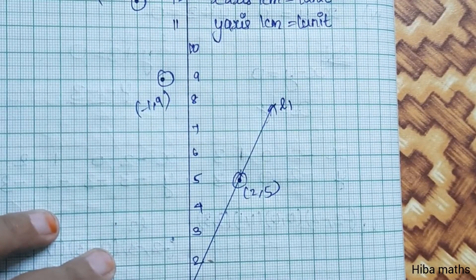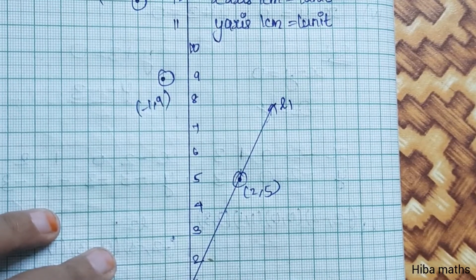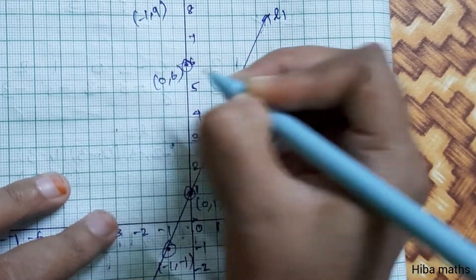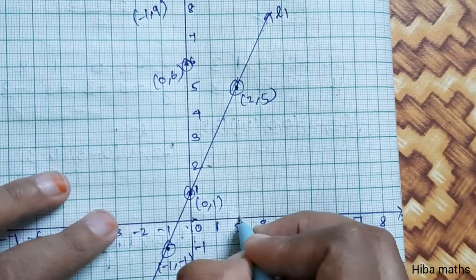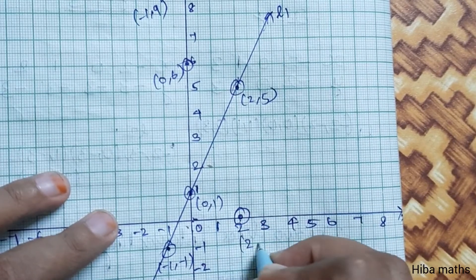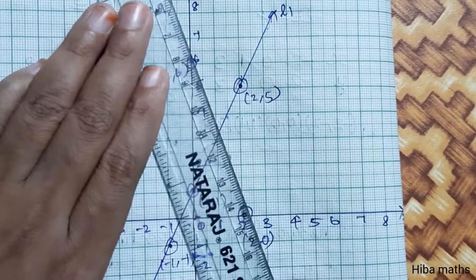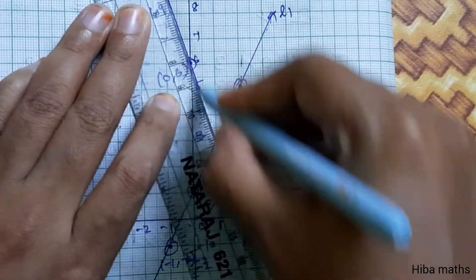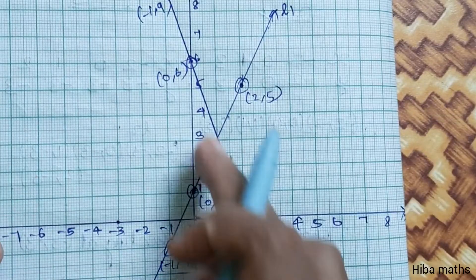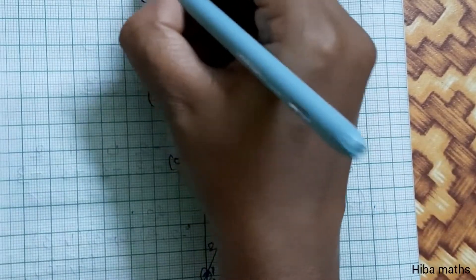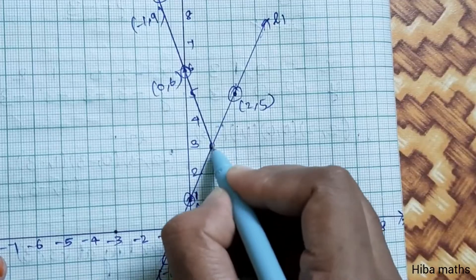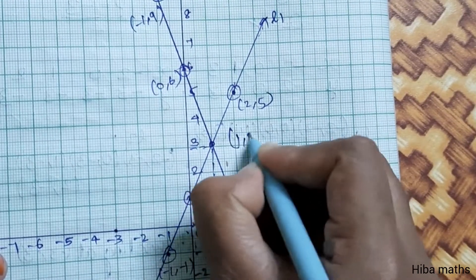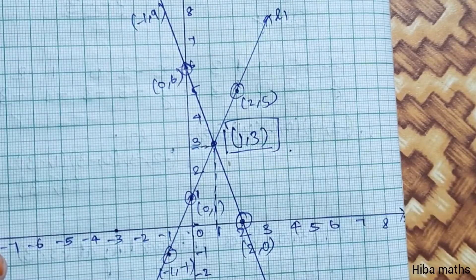The points for Line 2 are: (0, 6) and (2, 0). Let's plot Line 2 using these points. We have 3 or 4 points plotted. The two lines L1 and L2 are intersecting at the point (1, 3). Solution Set: {(1, 3)}.